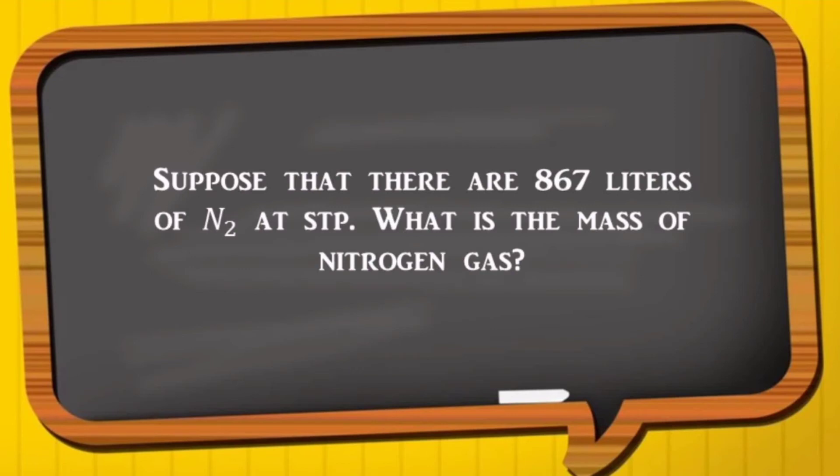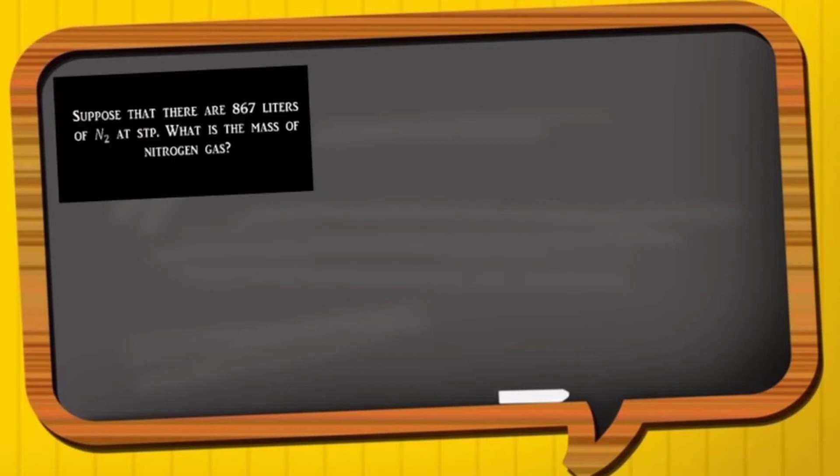Suppose that there are 867 liters of nitrogen gas at STP. What is the mass of nitrogen gas? To convert volume to mass,